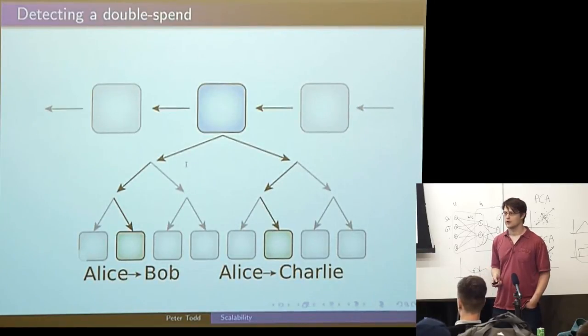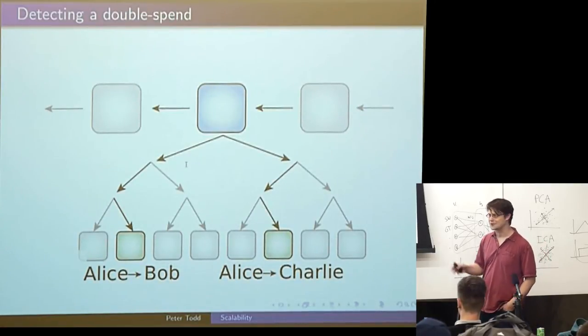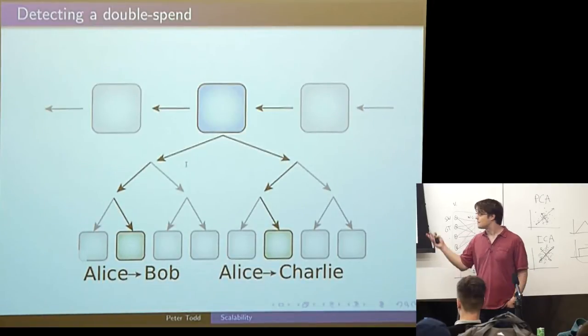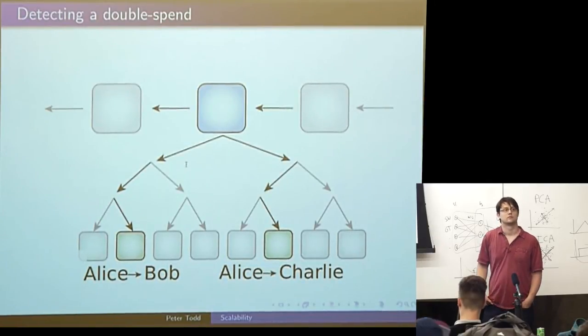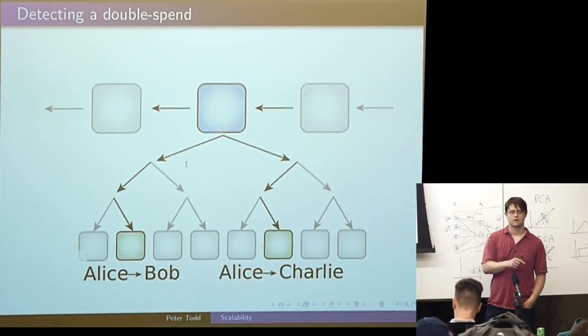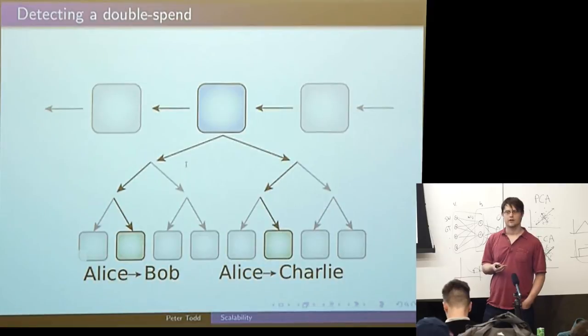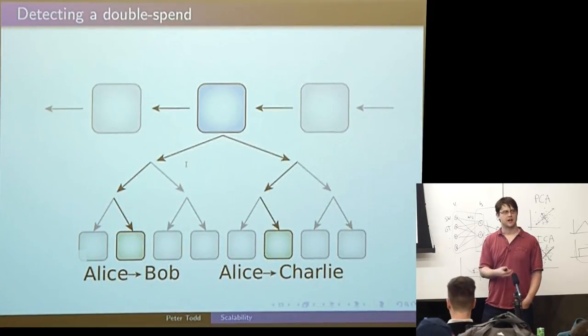If Alice gives the same bitcoins to Bob and Charlie at the same time, on either side of the blockchain tree, things look valid. Alice spent bitcoins on one side. Alice spent bitcoins on the other side. Everything checks out. It's just she magically created bitcoins out of thin air. And how do you, in a decentralized way, where every node participates in less than the full consensus, do you scale this up? It's not really clear. And this is where I could go on for a couple hours talking about the various schemes people have tried to come up with.